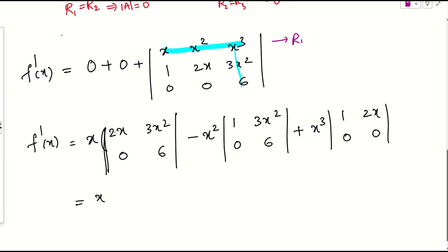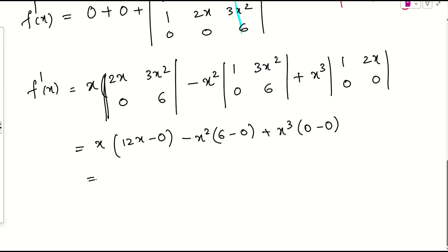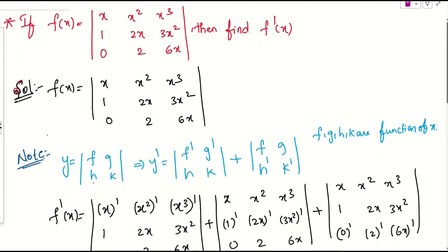Computing: x into (2x × 6 − 3x squared × 0) gives x × 12x = 12x squared. Minus x squared into (1 × 6 − 3x squared × 0) gives x squared × 6 = 6x squared. Plus x cubed into (1 × 0 − 2x × 0) = 0. So f dash of x equals 12x squared minus 6x squared = 6x squared. That is our final answer.